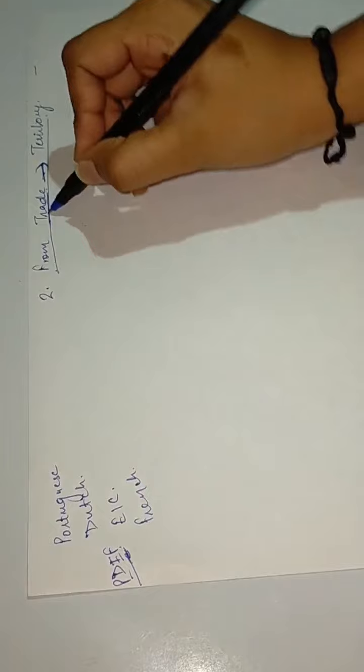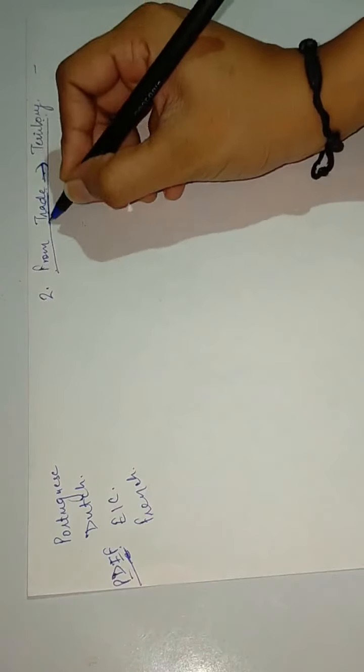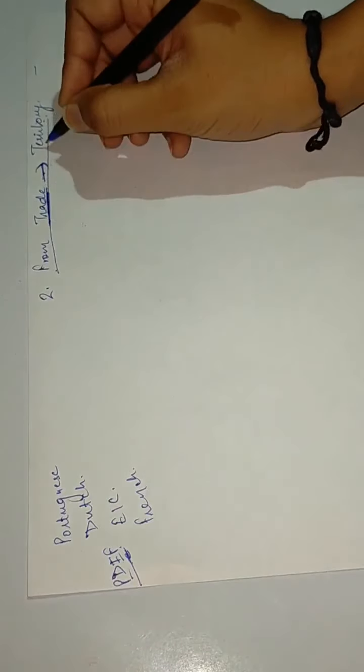Here we begin chapter 2 of class 8 history: From Trade to Territory. First, before starting any chapter, we should know the meaning of the chapter name. So here it is - from trade to territory - people came here to trade and they established their territory here.